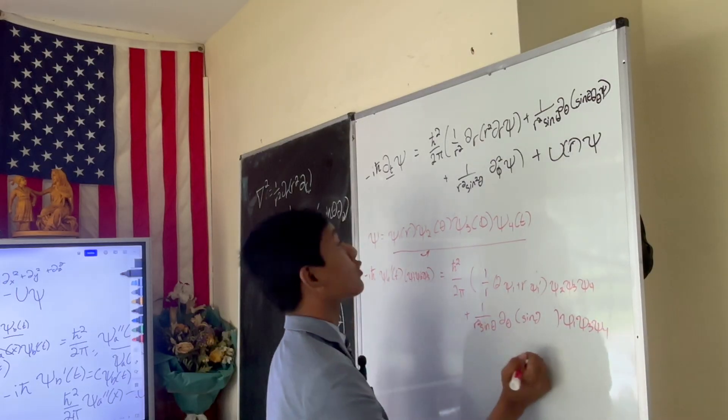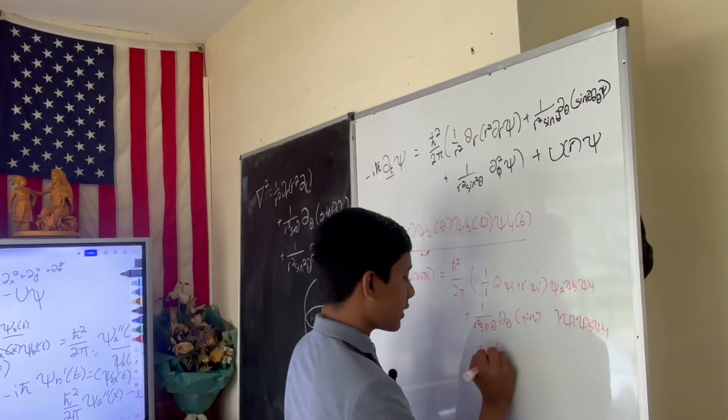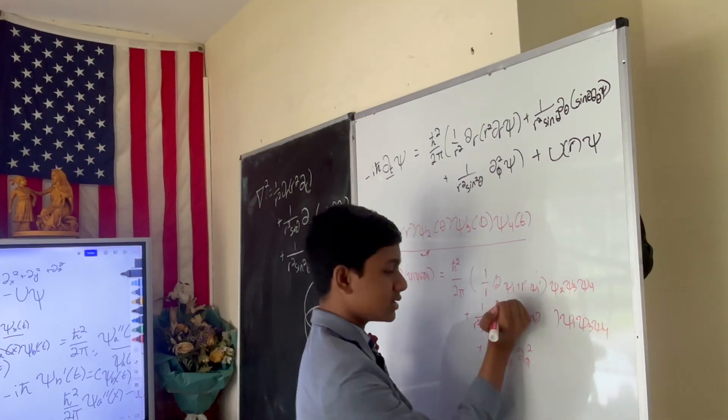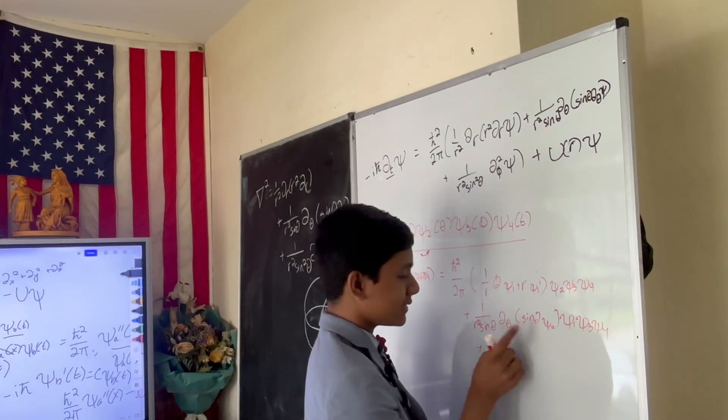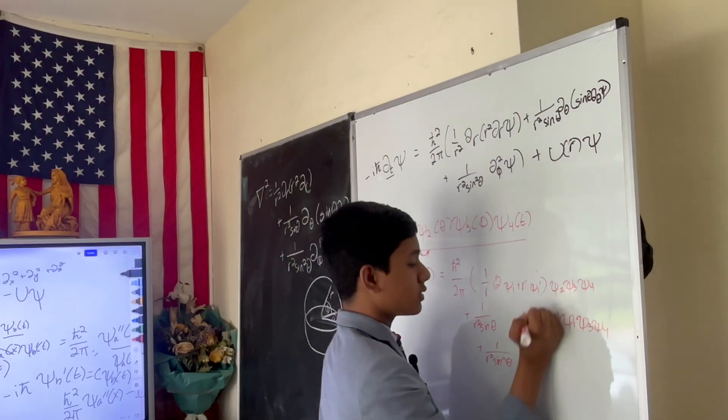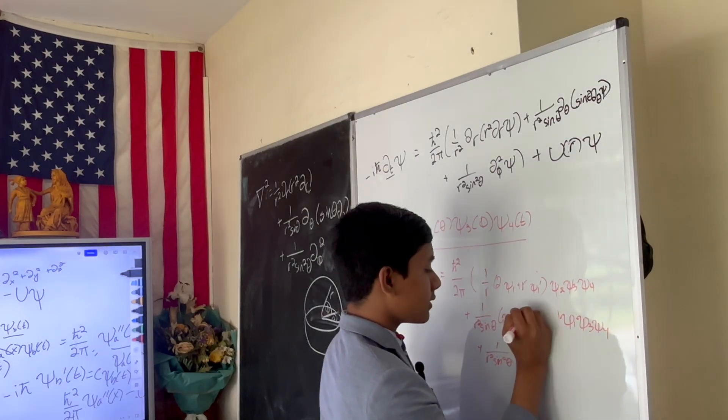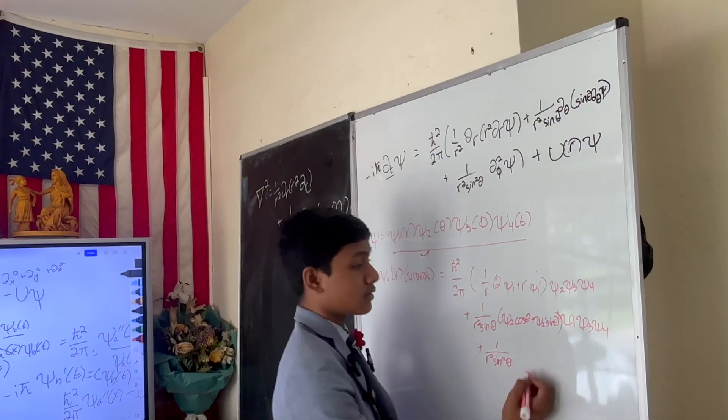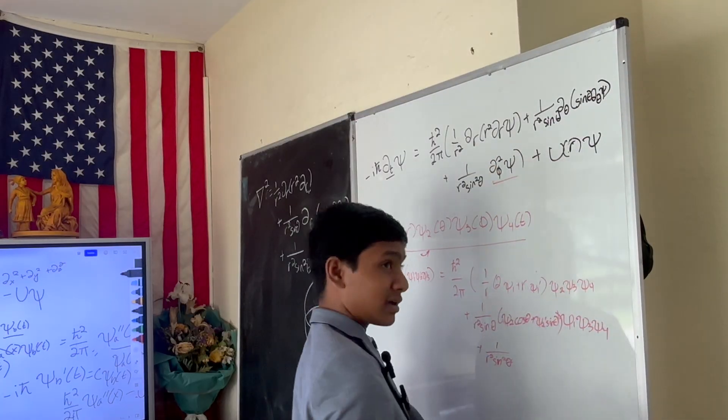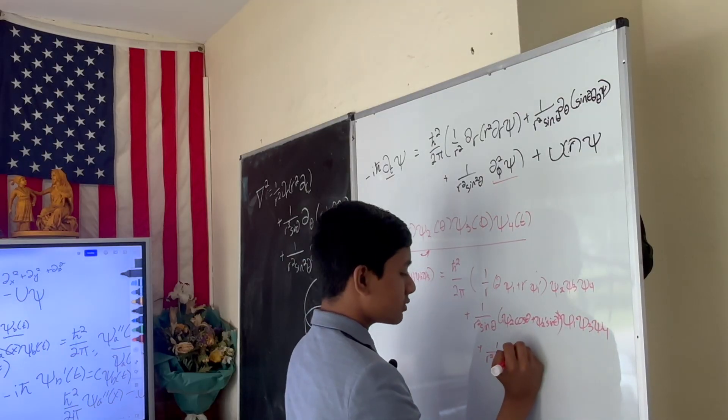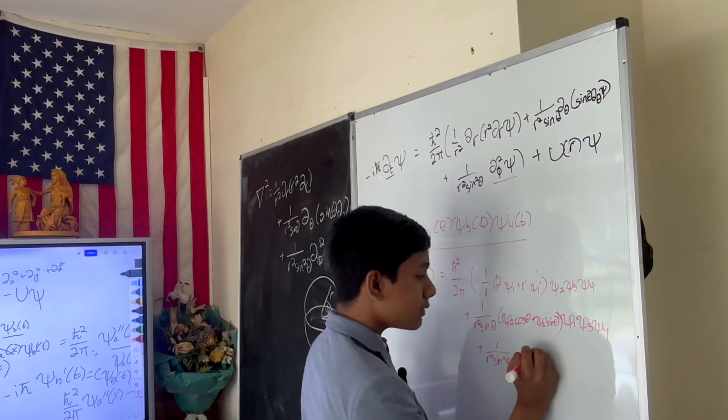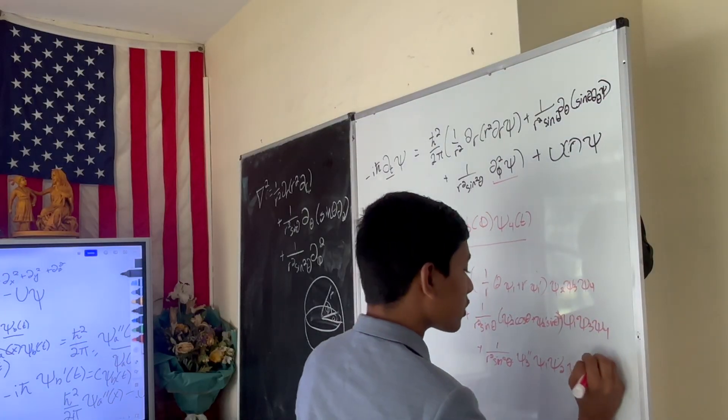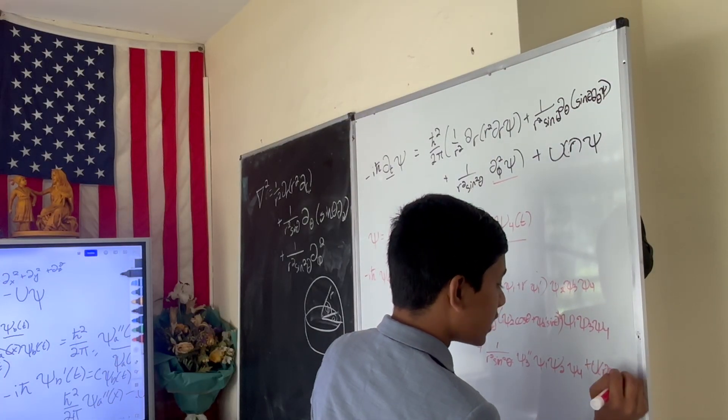Oh boy, back to the function. So you get plus 1 over r squared sine squared theta, partial psi squared. What's this going to be? It's psi 2 cosine theta plus psi 2 prime sine theta. And what's going to be this term? Well, I mean, it's actually fairly simple. We don't have to use the product rule for this. And that's going to give us psi 3 double prime, psi 1, psi 2, psi 4, plus u of r, psi 1, psi 2, psi 3, psi 4. Oh boy, oh boy.